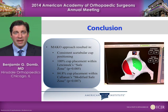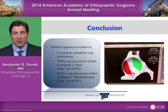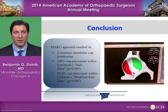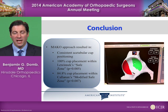The Mako approach resulted in very consistent acetabular cup positioning: 100% of the cups were placed within Lewinik's safe zone and 85% within Kalanand's modified safe zone. This was a very statistically significant improvement over the freehand technique.